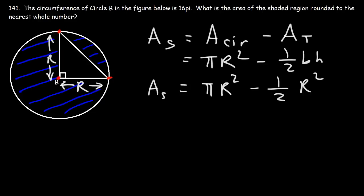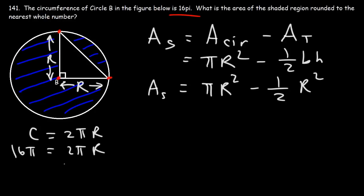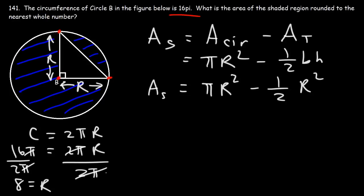To calculate the radius, we use the circumference formula: circumference equals two pi times the radius. The circumference in this example is 16π. Dividing both sides by 2π, the π's cancel and R equals 16 divided by 2, which is 8. Now that we have the radius, we can plug it into our expression to get the answer.